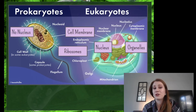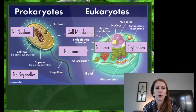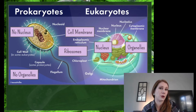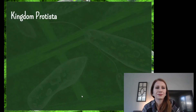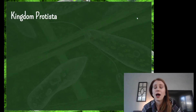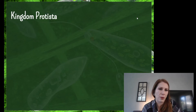Prokaryotes do not have a nucleus, and they do not have organelles. They don't have things like a chloroplast or a mitochondria — those they just don't have. Now let's go through our kingdoms. I'm going to start at maybe the strangest kingdom and kind of work our way to the ones we know better.